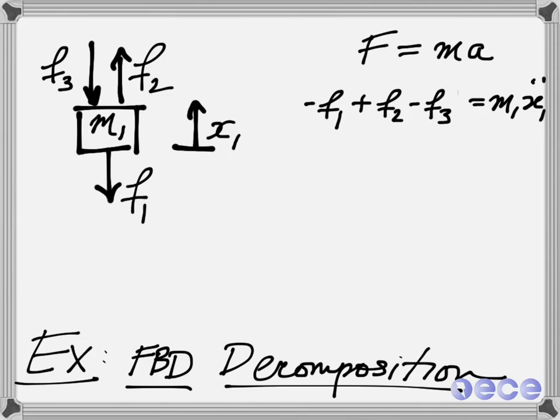Likewise, we can actually change the direction of x1 and indicate that our anticipated motion and direction is down. When we do this, we have to change the sign of the right-hand side, again to indicate now that f2 is in the opposite direction of x1 double dot, but f1 and f3 are in the anticipated direction.